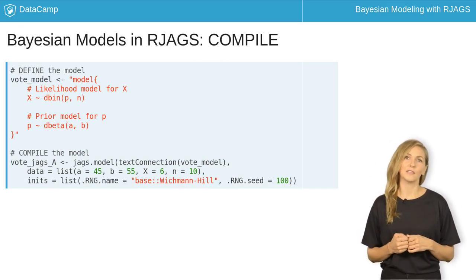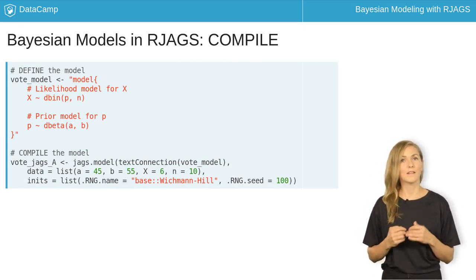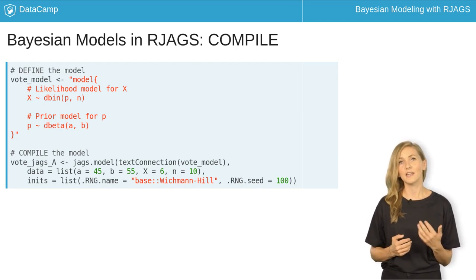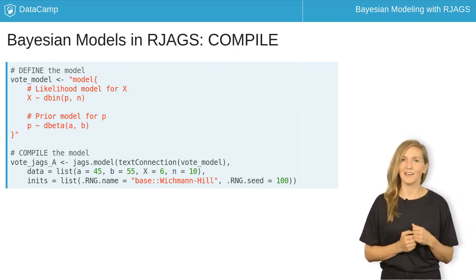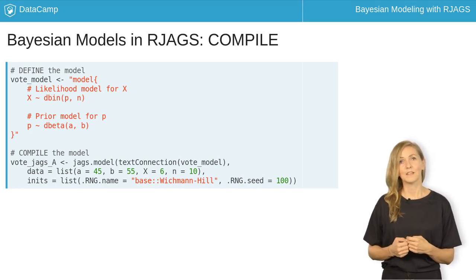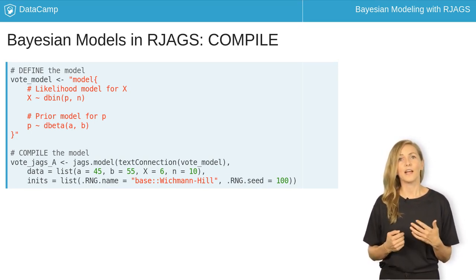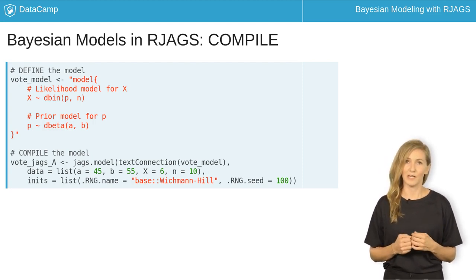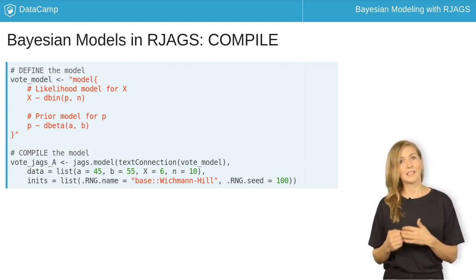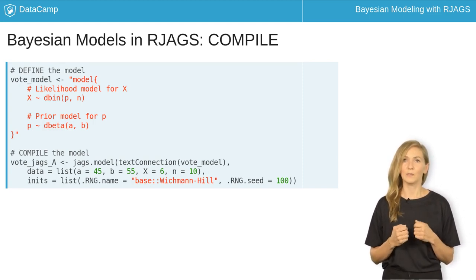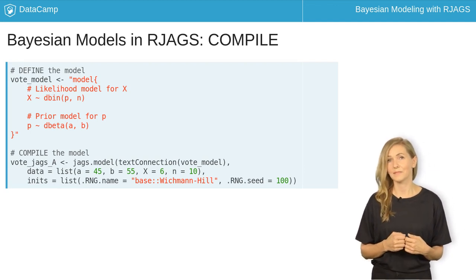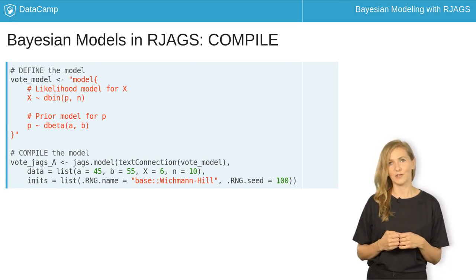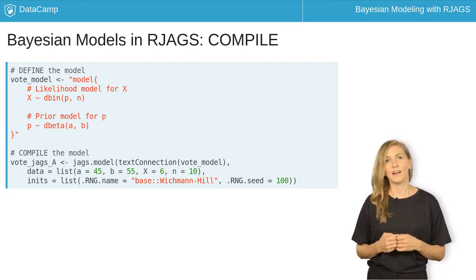Next, we compile the model using the JAGS model function. Very loosely speaking, the goal here is to send information out to the JAGS program, which will then design an algorithm to sample from the posterior. In the first argument, we provide a text connection to the defined vote_model string. In the data argument, we supply the values of the A and B prior shape parameters, as well as the observed values of polling data X and N. The inits argument ensures the reproducibility of our simulation results. We'll elaborate on this in Chapter 2.